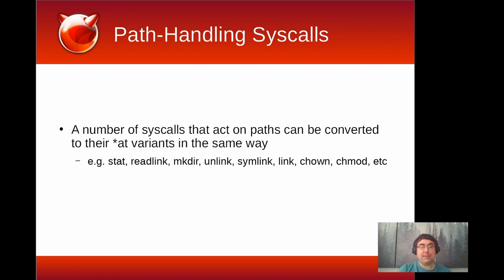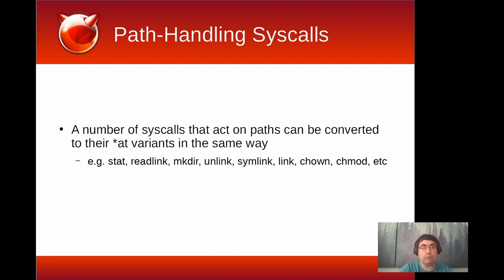Having established this, any syscall that acts on global paths — not relative paths like openat does — can be converted to its 'at' variant with basically the same process: copy the path, resolve symlinks, look up the directory file descriptor, split into the directory FD part and the remaining path, then use stat_at, readlink_at, or whatever 'at' syscall is needed to emulate the original syscall's behavior. I give a short list, though that's not even all of them — there are all kinds of syscalls I've written rewriters for that all do essentially the same thing.